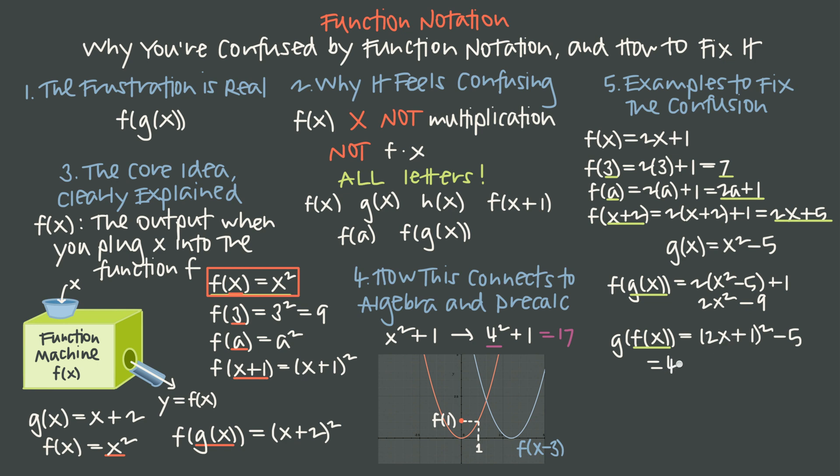that gives us 4x squared plus 2x plus 2x is plus 4x, and then 1 times 1 is 1, so plus 1, and then minus 5, or 4x squared plus 4x plus 1 minus 5 is a minus 4, and there's our composition, g of f of x.